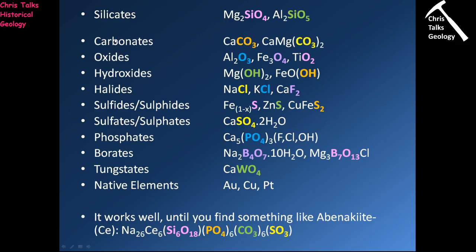An oxide is when you have a metal bonded to oxygen by itself — the amount of oxygen is variable, but a metal bonded alone to oxygen gives you an oxide. Hydroxides are where we have a metal bonded to an OH group. The composition is always OH, with no variation in the number of oxygens or hydrogens.